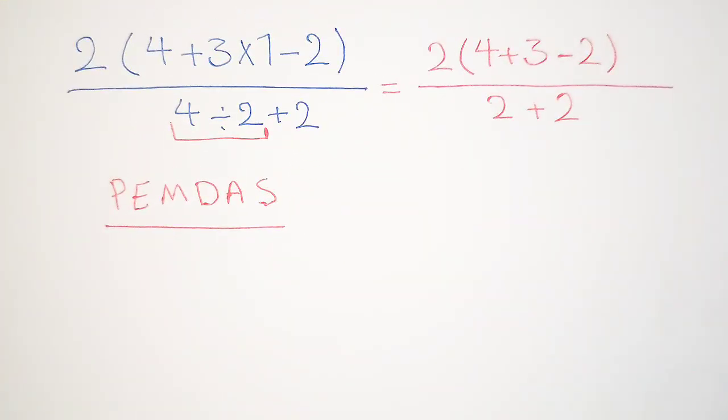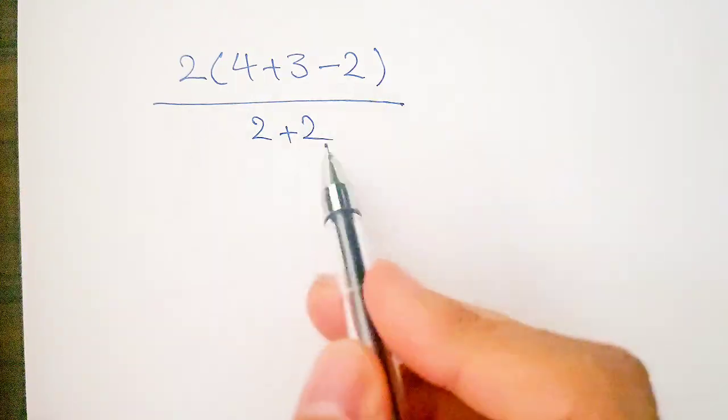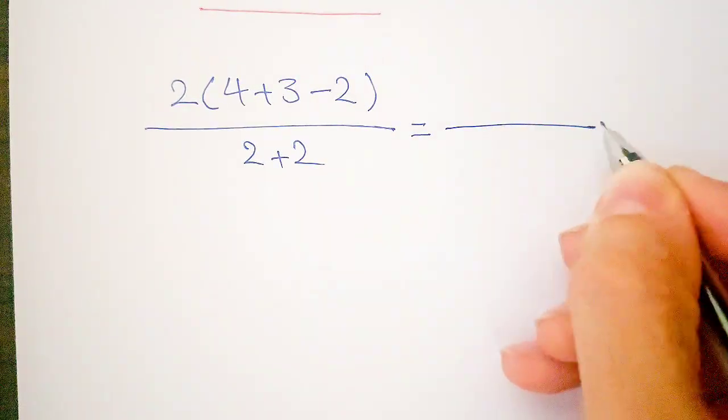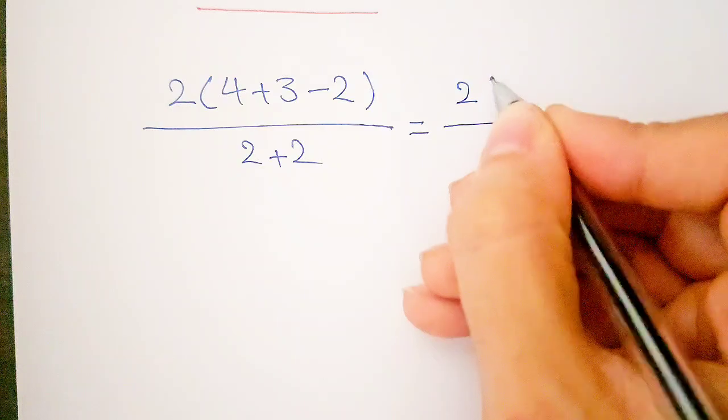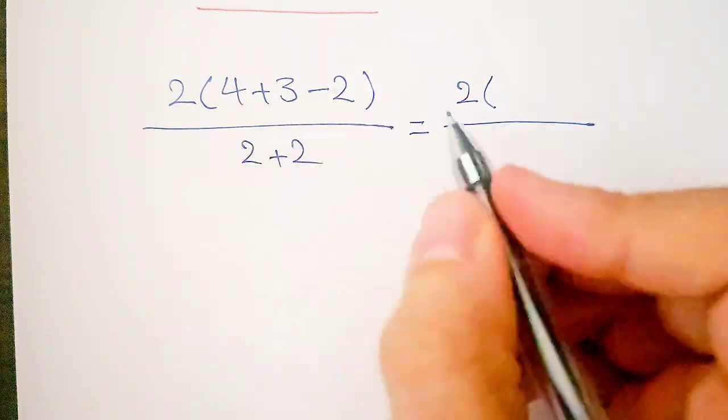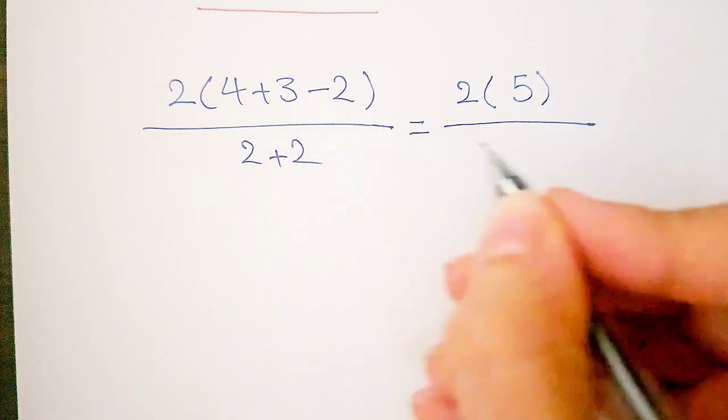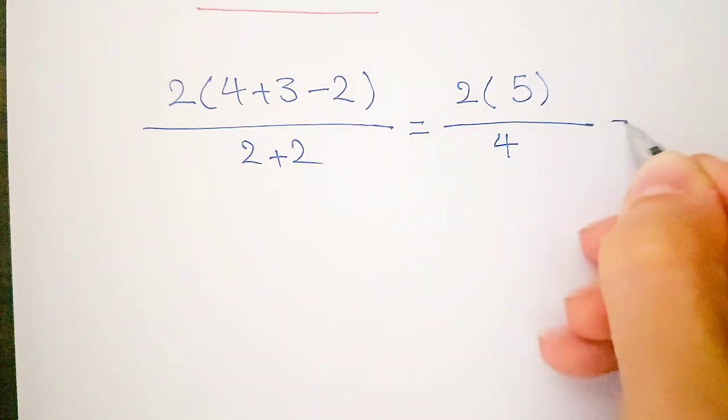Now we have a new fraction. In the numerator, first we simplify what's inside the parentheses: 2 times (4 plus 3 minus 2) equals 2 times 5. In the denominator, 2 plus 2 equals 4.